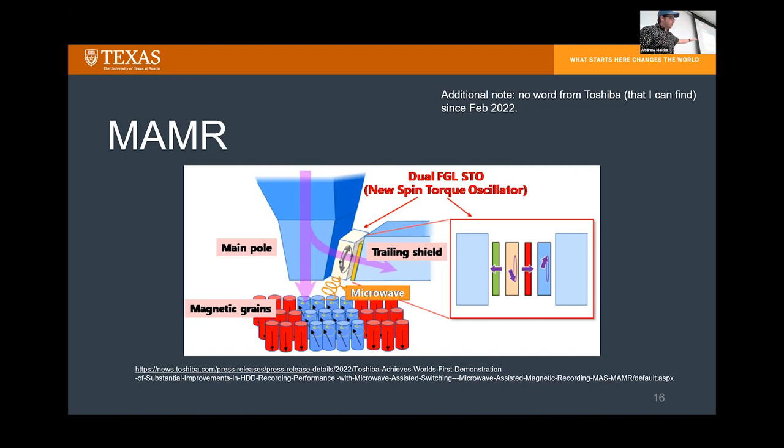The other method is Microwave Assisted Magnetic Recording (MAMR). Instead of attaching an optical fiber to the write head, you have a field generating layer — a spin torque oscillator. Field-polarized current runs through the generating layer, creating microwaves as the spin changes orientation; these hit the platter below, lowering the required field to cause magnetization change. Toshiba has been pursuing this approach, though recent press releases have been limited.